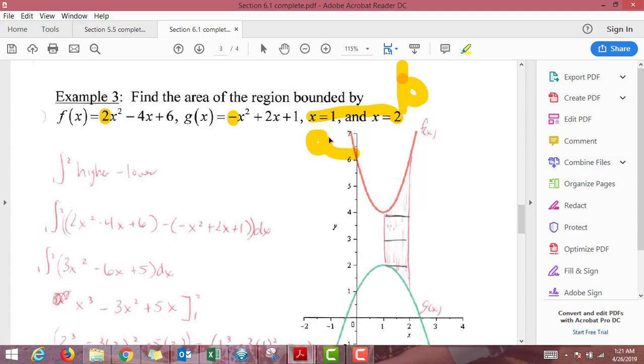So we're going to be integrating from A to B, the numbers they gave us, and that's where this one's nicer than the previous one, and we need to do higher minus lower. Well, this one's pretty cut and dry. The red function is clearly above the green function, definitely on the interval we're talking about from X equals 1 to X equals 2, but then actually beyond that.